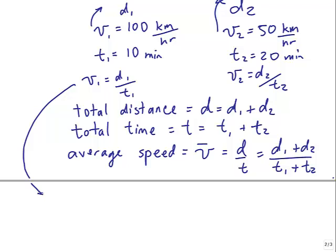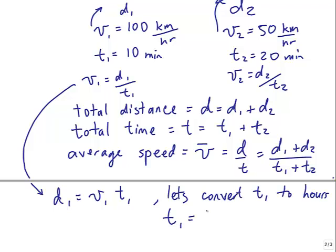Now we need to figure out those D1s and D2s. We can use D1 is V1 times T1, and let's actually convert T1 to hours. So we set up 10 minutes times something, which is hours over minutes, so that the minutes cancel.